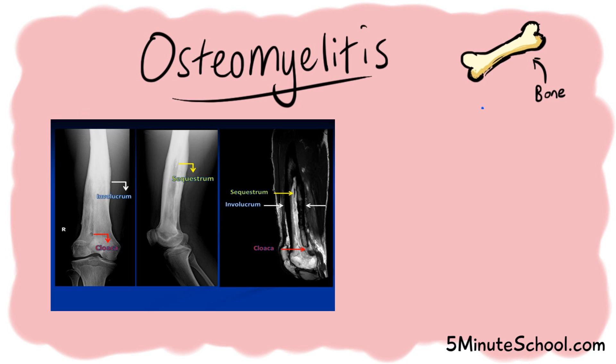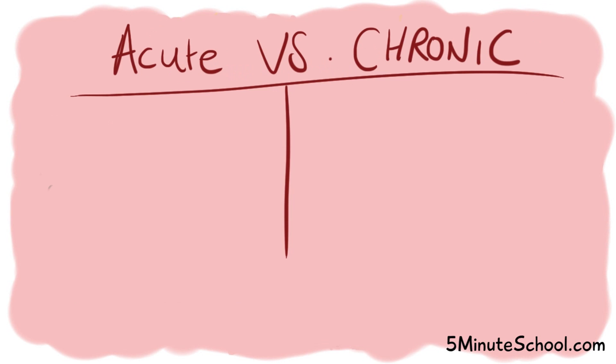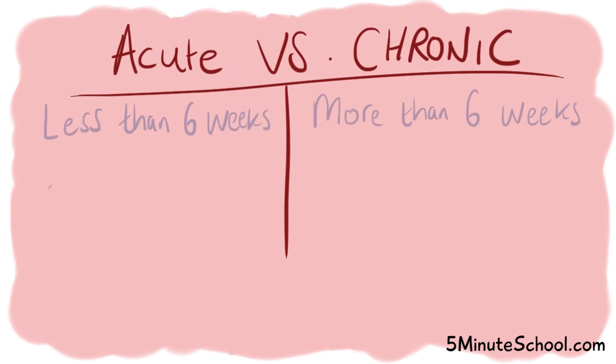One way to diagnose the type of osteomyelitis is based on how long the infection has been present. If it's been less than 6 weeks it's considered the acute phase, and greater than 6 weeks is considered chronic.